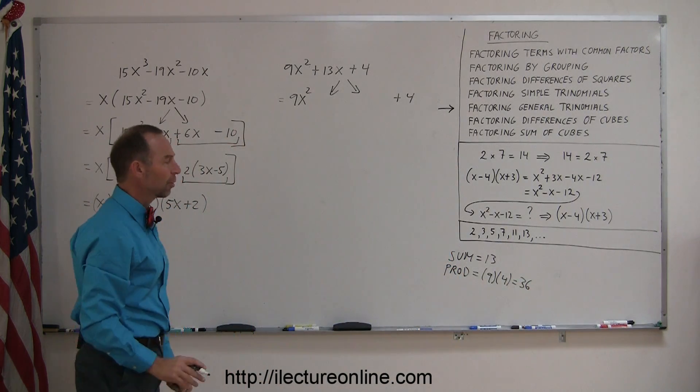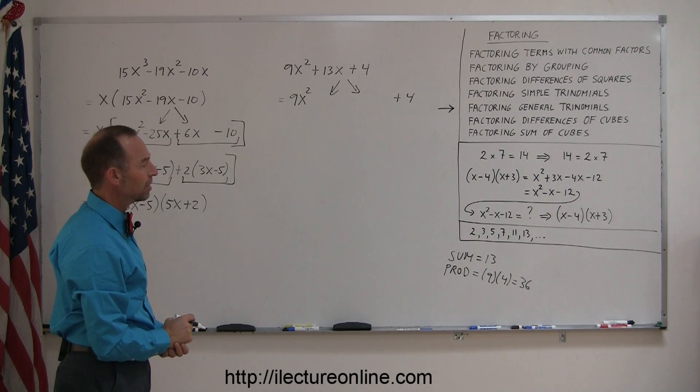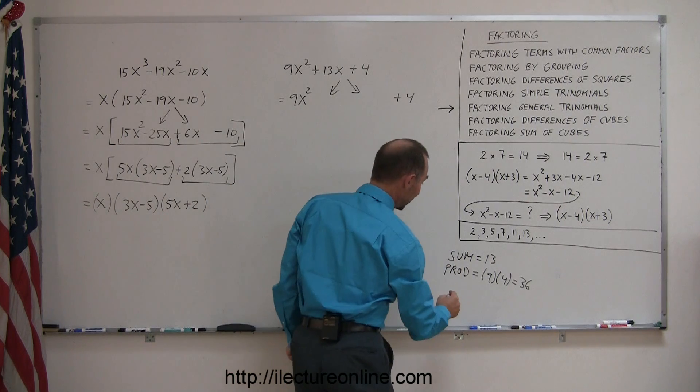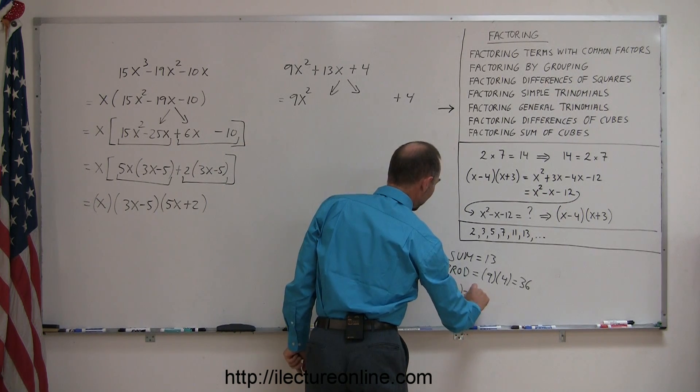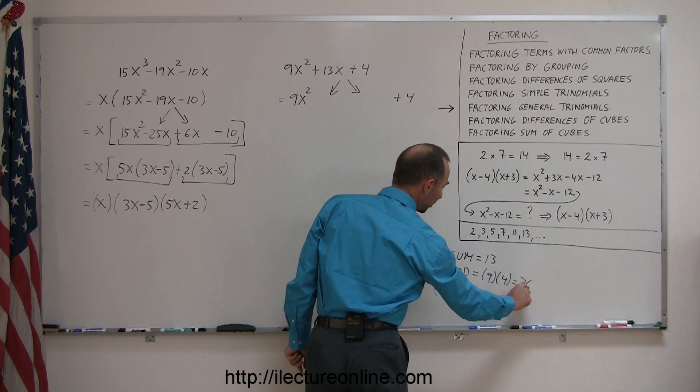So now you're looking for two numbers. When you add them together, you get 13. When you multiply, you get 36. So you say, well, 6 and 7 add up to 13. So 6 times 7... well, that's 42, which is not the right number. You're looking for 36.